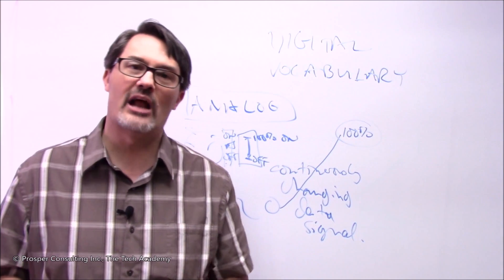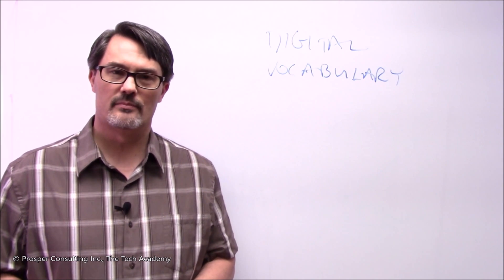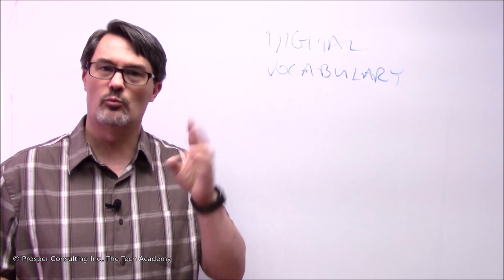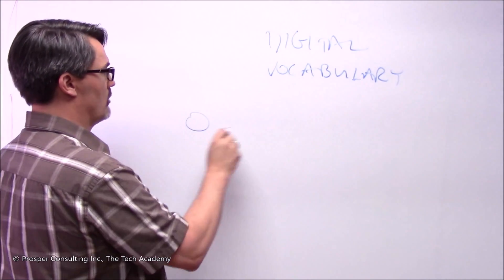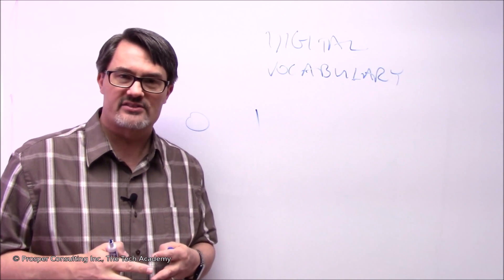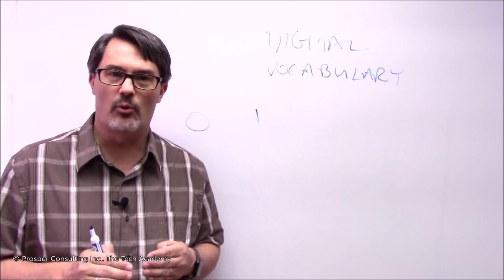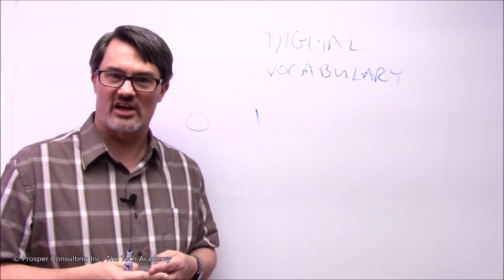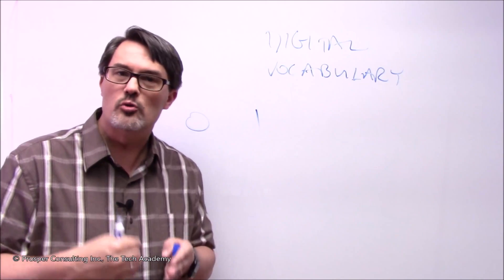One final note on how computers operate at the most basic fundamental level: computers operate off of only two digits — we call them digital computers. Two discrete values: zero and one. No matter how complex a computer gets, at its most basic level it's only operating off of two possible values. At any point in time, anywhere inside the machine where data can be stored or transferred, there is only ever one of two possible states for that data — it's either a zero or a one.